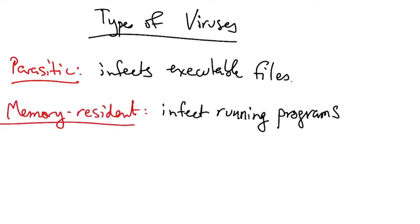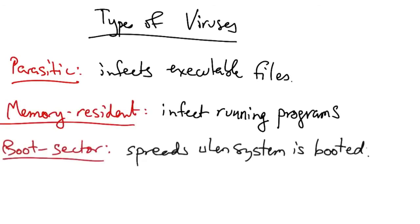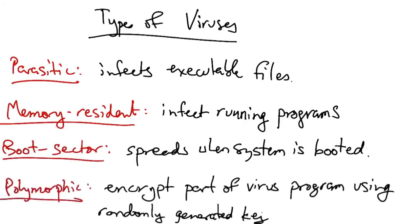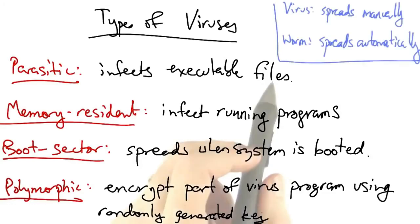A parasitic virus typically infects an existing executable file. A memory resident virus infects running programs. A boot sector virus spreads whenever the system is booted. A polymorphic virus encrypts part of the virus program using a randomly generated key.